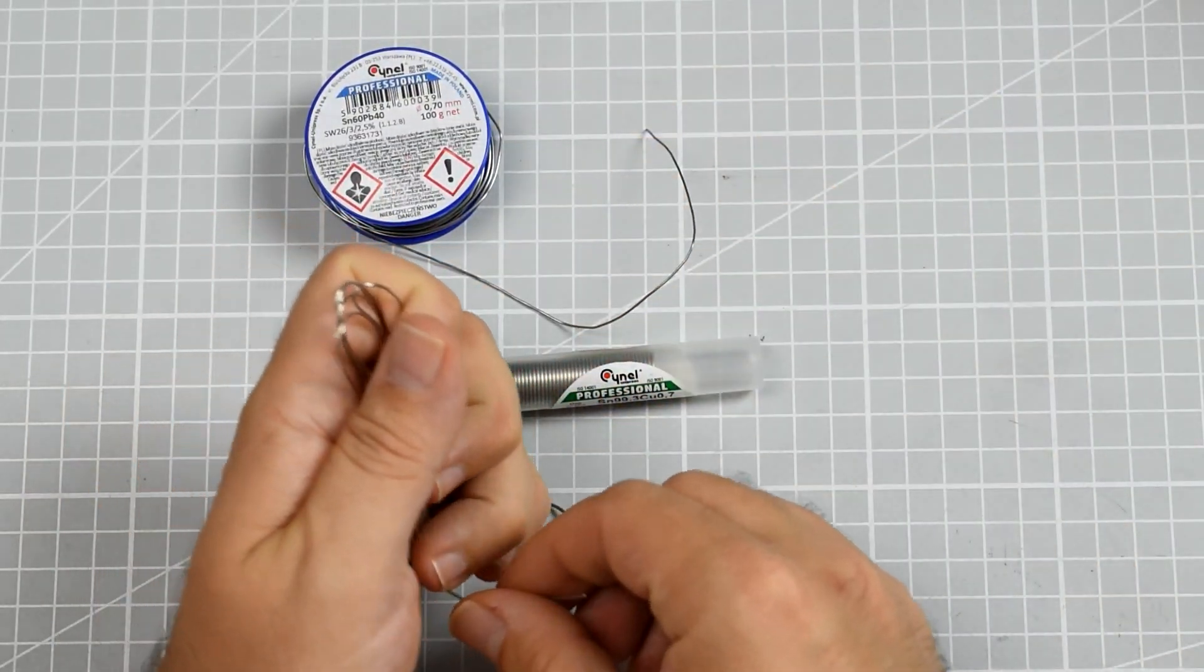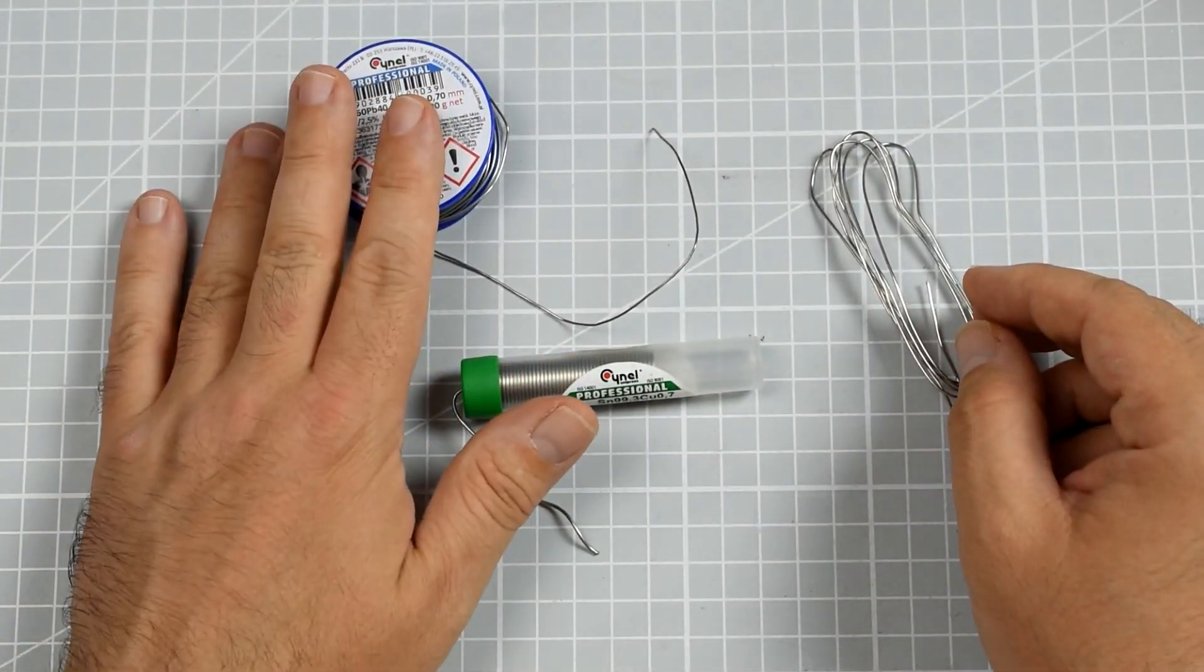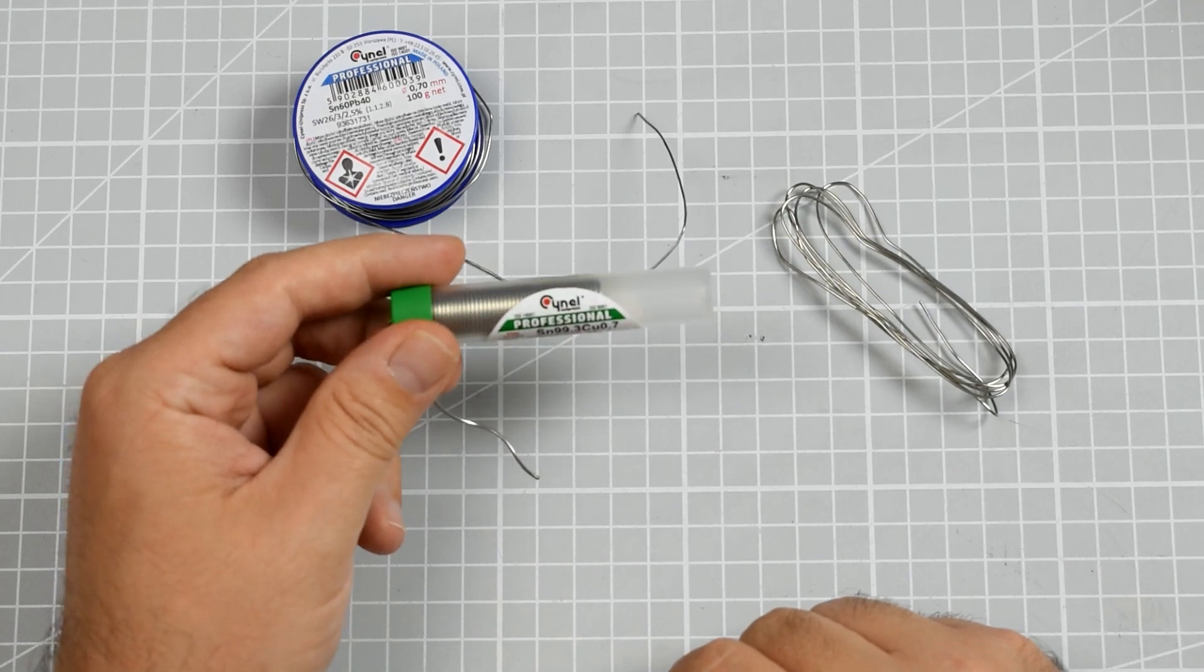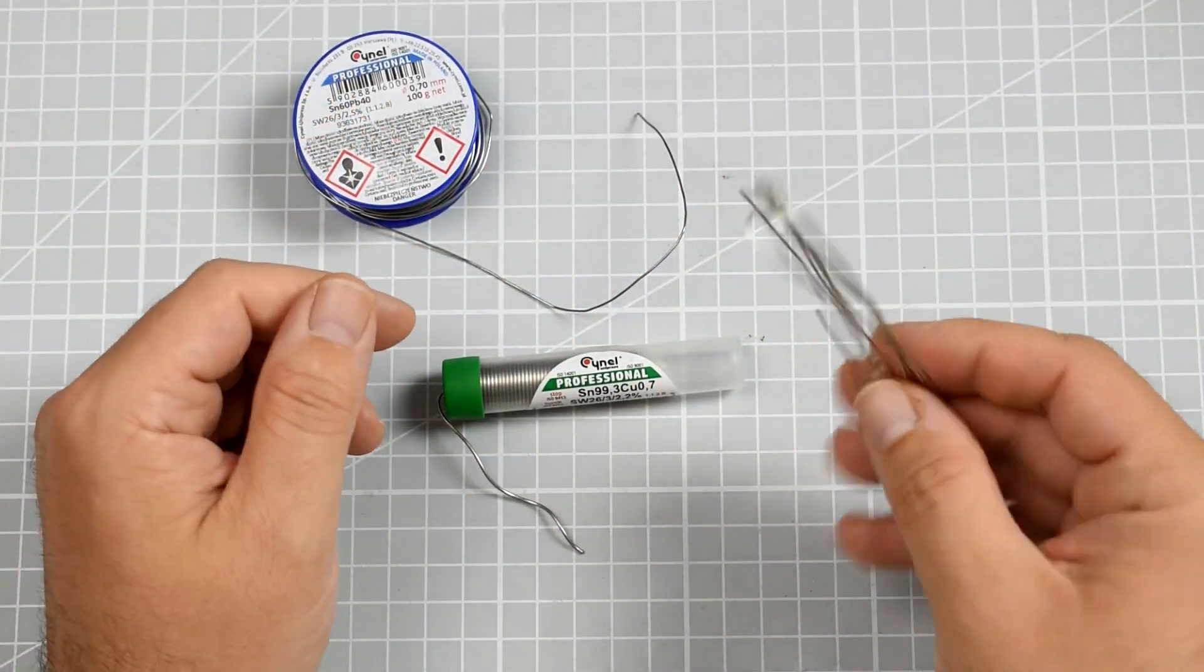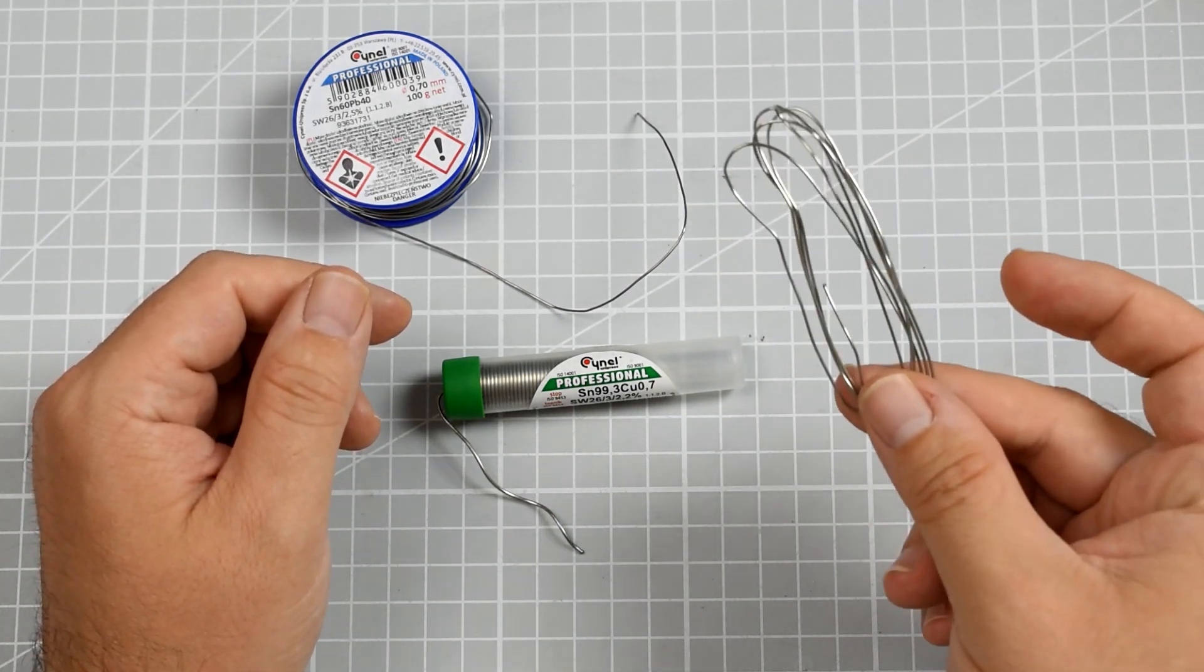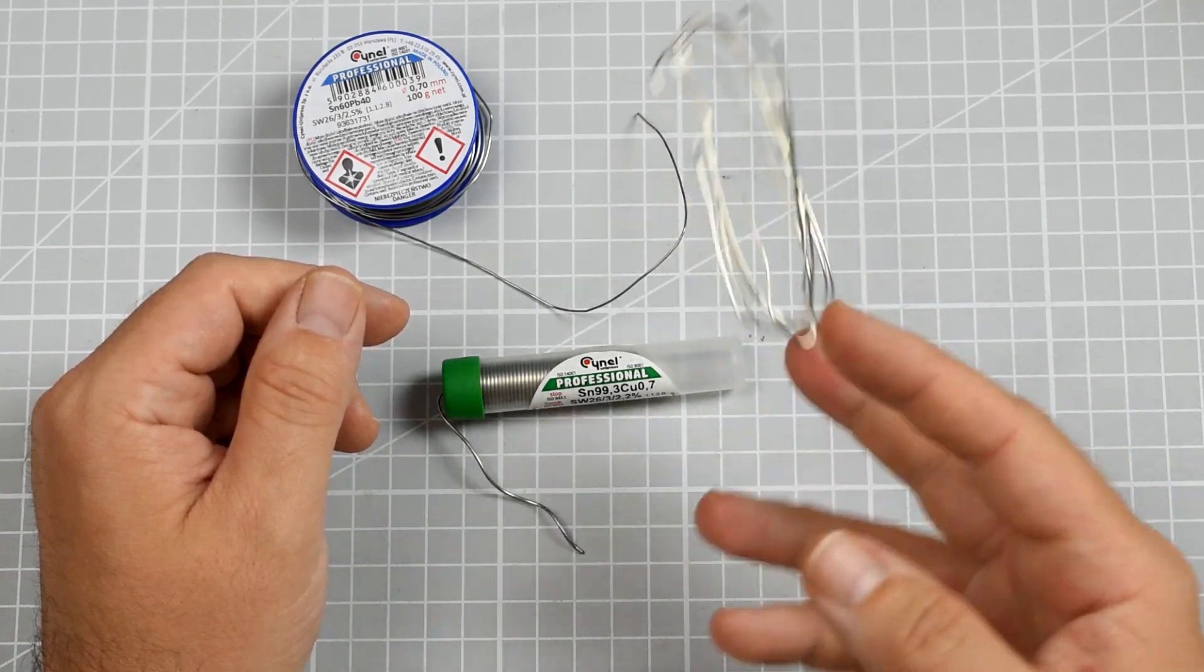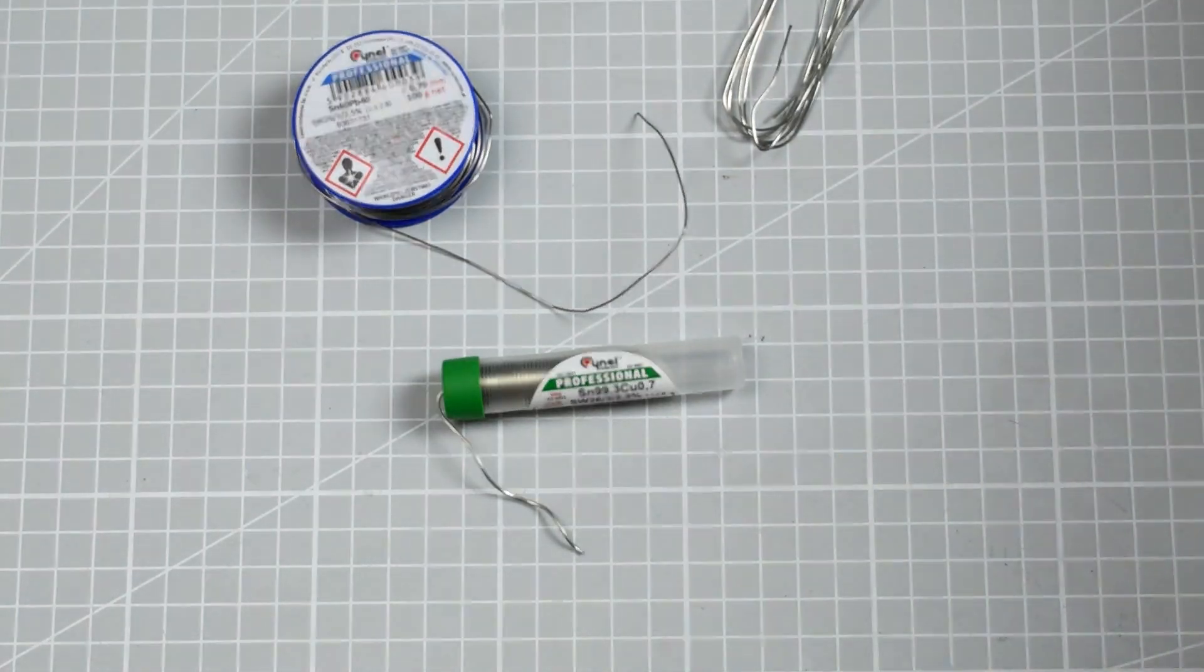So what are we going to do today? Today we're going to test if still the traditional leaded solder is the best, or maybe the 99% tin and 0.7% copper is valid competition. Or maybe you should start using the one with silver, but probably you will never start using, at least in large quantities, the one with silver because it's extremely expensive. And if you really don't have to, you probably will not ever use it.